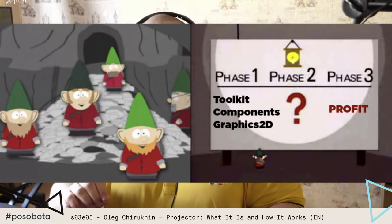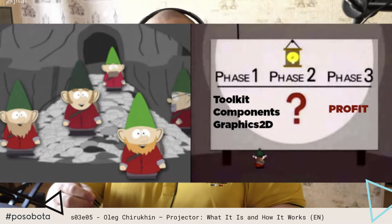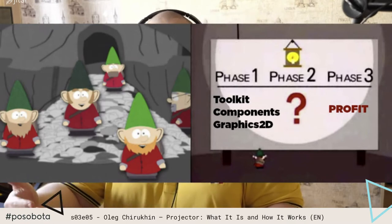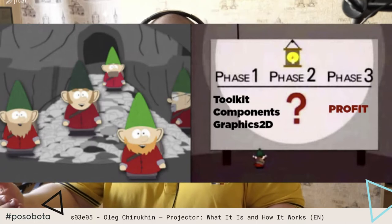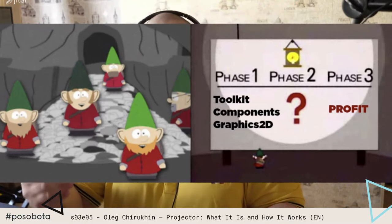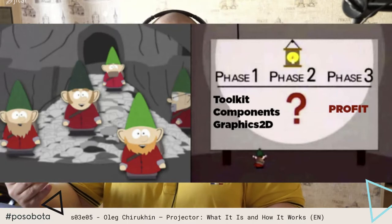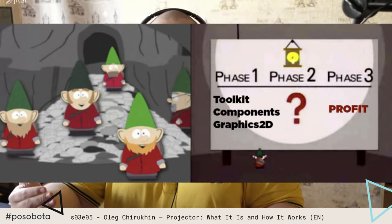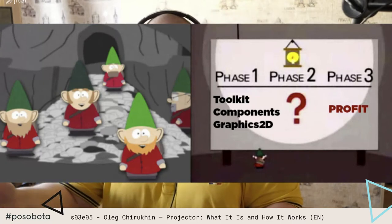AWT and Swing work slightly differently on different operating systems, so we decided to implement only a subsystem for Linux for now. That's why Projector only works on Linux on a bare operating system. If you want to use Windows or Mac, it needs to be run in Docker or WSL, unfortunately. There are many different heavyweight components, so we simplified the work by implementing peers only for what is really needed for JetBrains IDEs to work. Any application will have at least one window and one panel, and we have implemented all of them. Other peers exist in our code but have stub implementations — methods that return a value always return zero, and methods that return void do nothing.